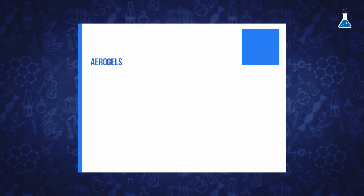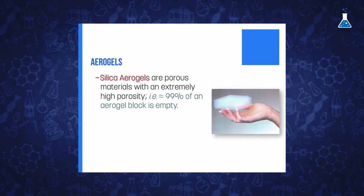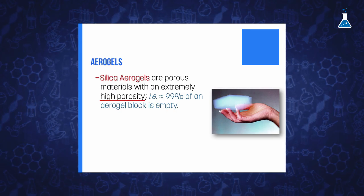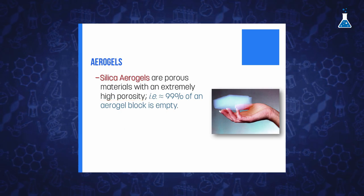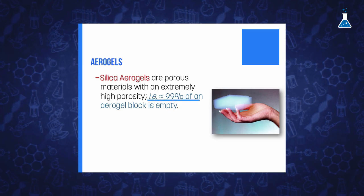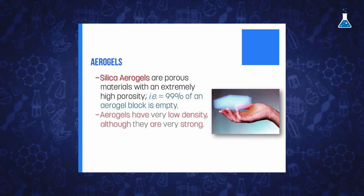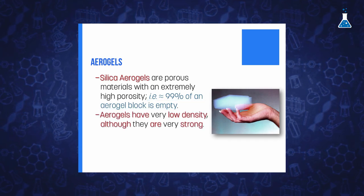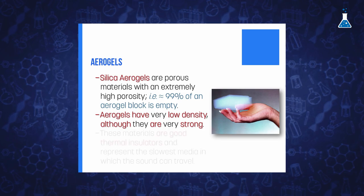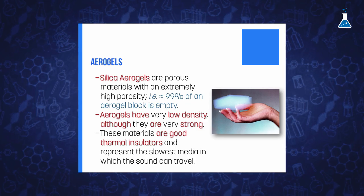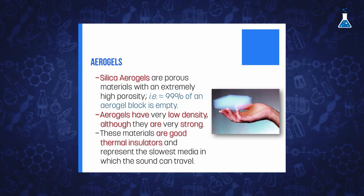Furthermore, there exists another family of compounds with silicon dioxide in their composition. They are named aerogels. They present a particular characteristic of containing a large number of pores distributed throughout the structure of silica. It is estimated that 99% of an aerogel block is empty, and as a result, this material presents a very low density, although they are still strong. It is also noteworthy that these materials are very good thermal insulators and represent the lowest medium in which sound can travel.